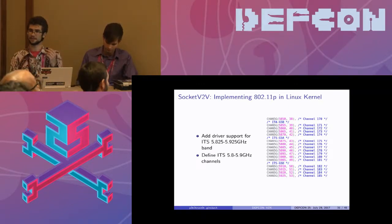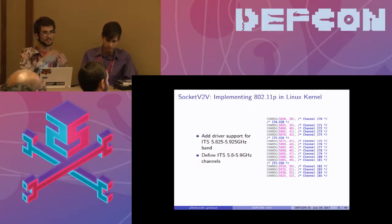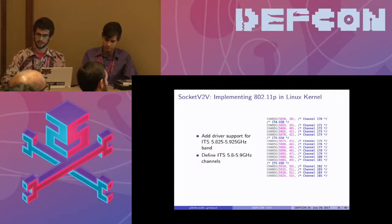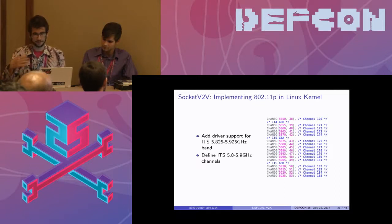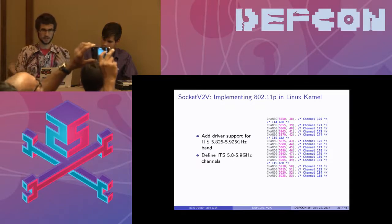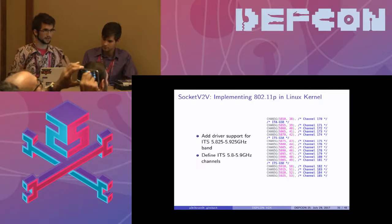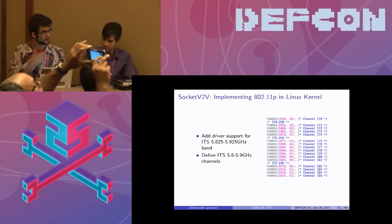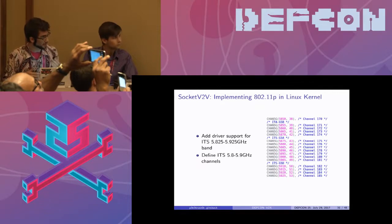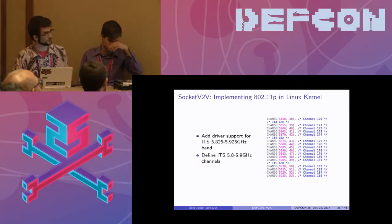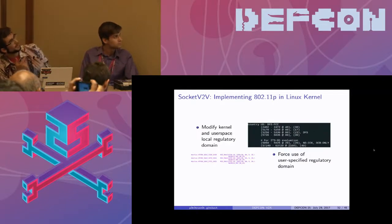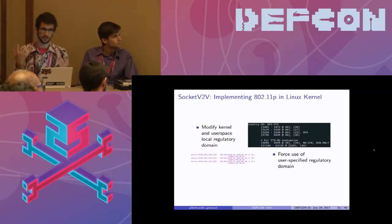Starting at the bottom of the stack: modify the regulatory domain and add definitions for the intelligent transportation system channels to the Atheros wireless drivers or to an arbitrary wireless driver. While it is built into the mainline Linux kernel, manufacturers of hardware specify a specific regulatory domain that hardware can operate in. You have to make a few slight modifications to each wireless driver, which are rather analogous and pretty much equivalent. You modify the regulatory domain in the kernel and in the user-space utilities.